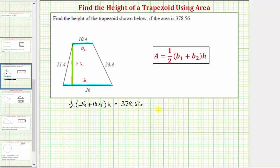Now we need to solve the equation for h. Let's first simplify the left side of the equation. Simplifying inside the parentheses, 26 plus 10.4 equals 36.4, so we have one-half times 36.4 times h equals 378.56.